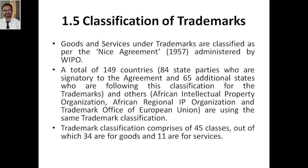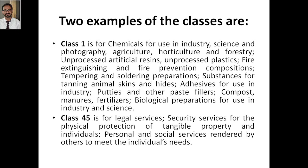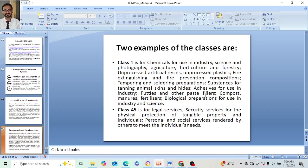In total there are 45 classes — 34 for goods and 11 for services. All 149 countries follow this classification, along with organizations like the African Intellectual Property Organization, African Regional IPO, and the IPO of the European Union. So, Class 1 is the example for goods and Class 45 for services. That concludes this topic.